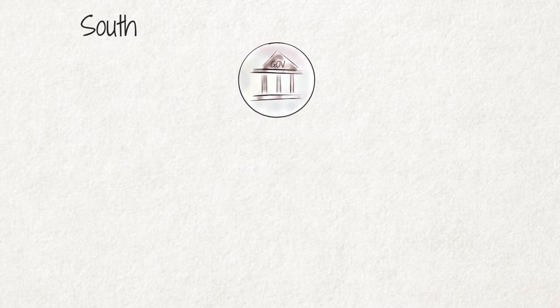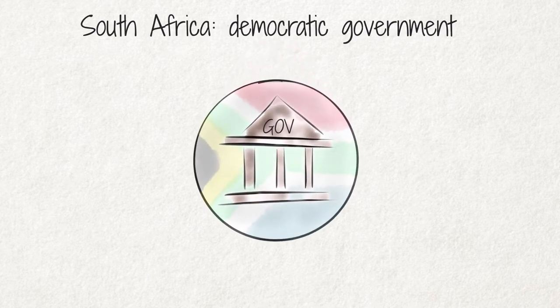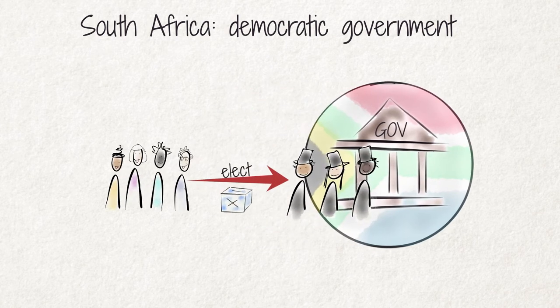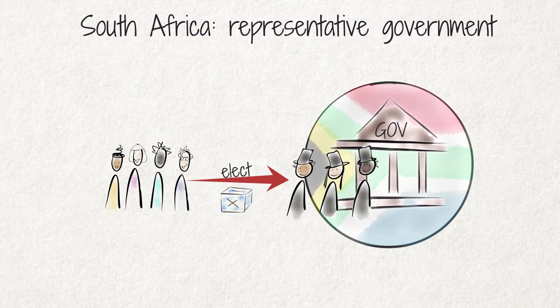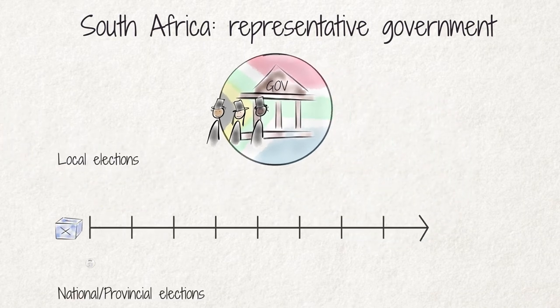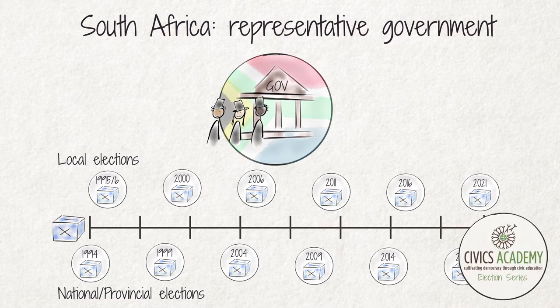There are many forms of government. In South Africa, we have a democratic form of government. The South African government is made up of a group of representatives that we elect through periodically held elections. We refer to it as a representative government. We explore different aspects of elections and why they are a central feature of democracy in more detail in the Civics Academy election series.